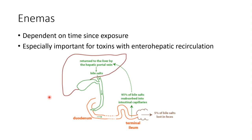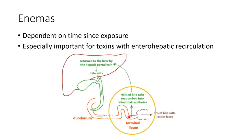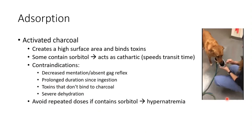Enemas are not as common but are effective when you're late in exposure or have toxins that are enterohepatically recirculated. With enterohepatic recirculation, 95% of bile gets reabsorbed and brought back to the liver. If a toxin binds to bile salts, it will continue recirculating back and forth. Enemas with lactulose or plain enemas can help grab those bile salts with toxin bound to them and have them excreted naturally.